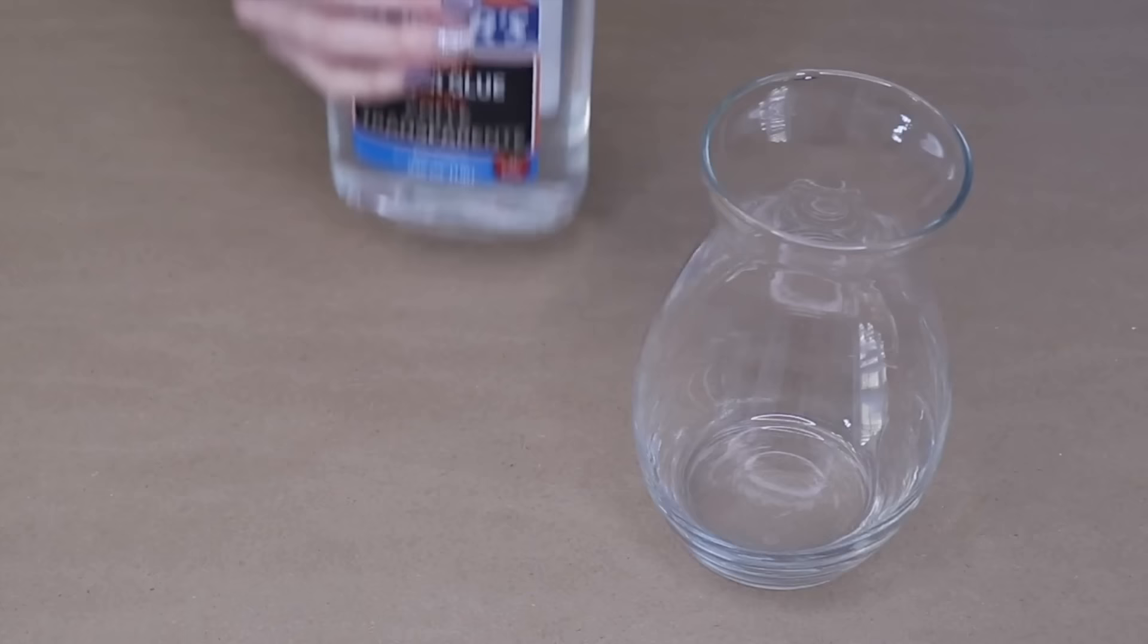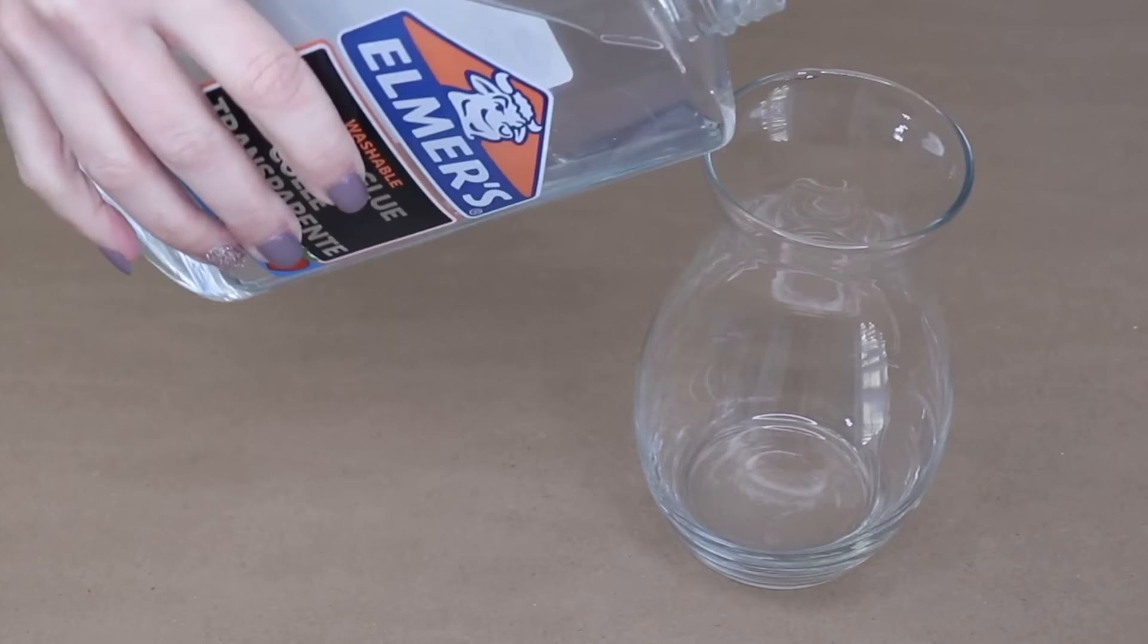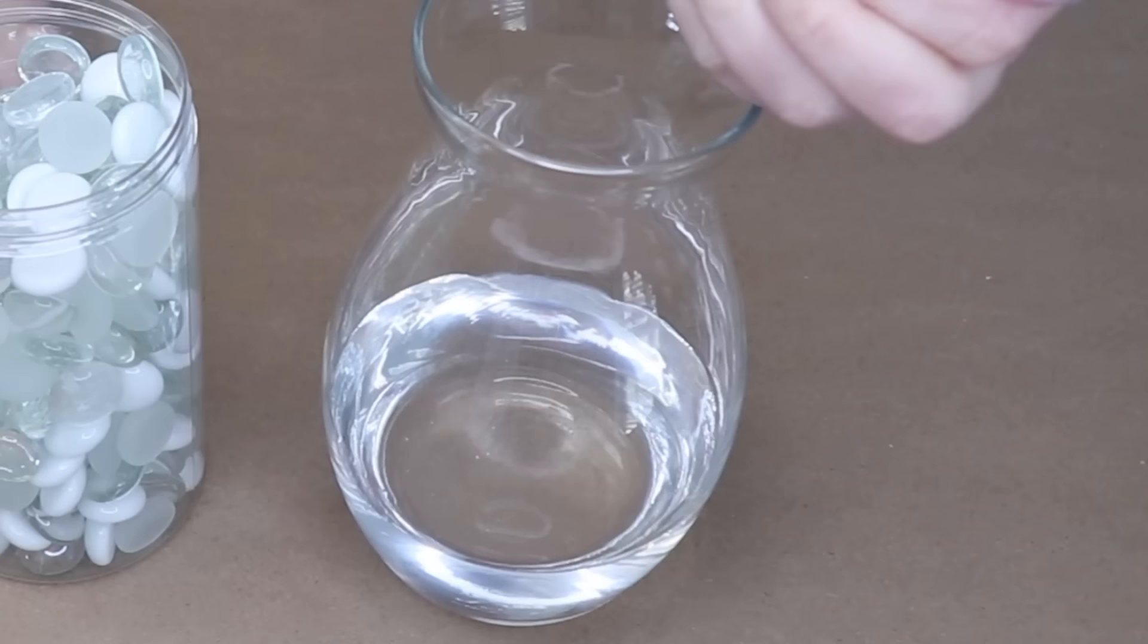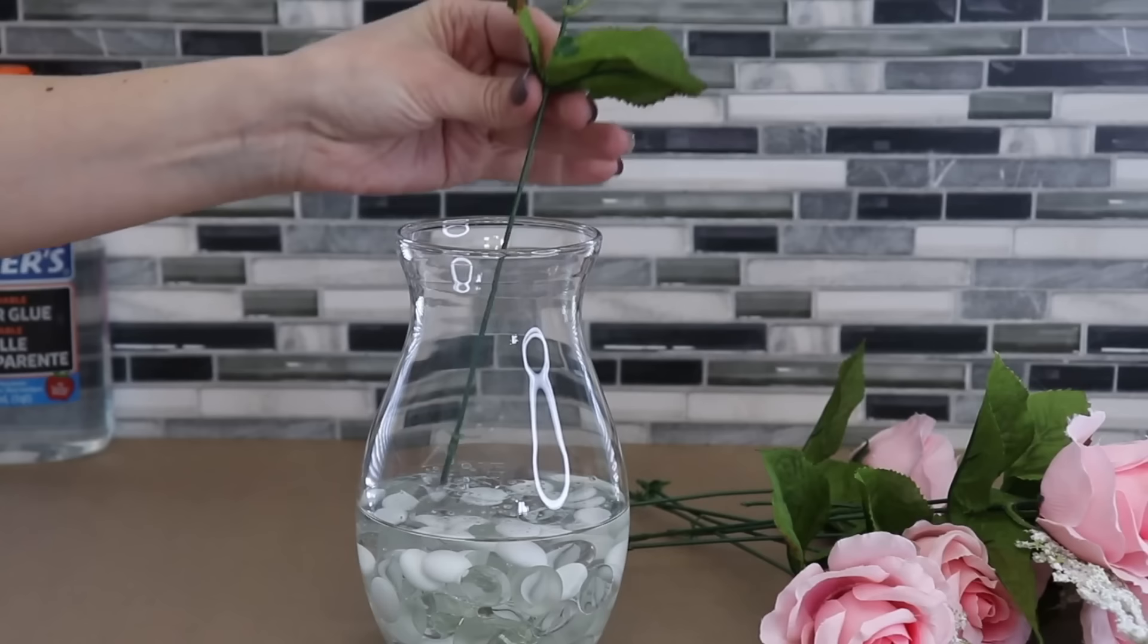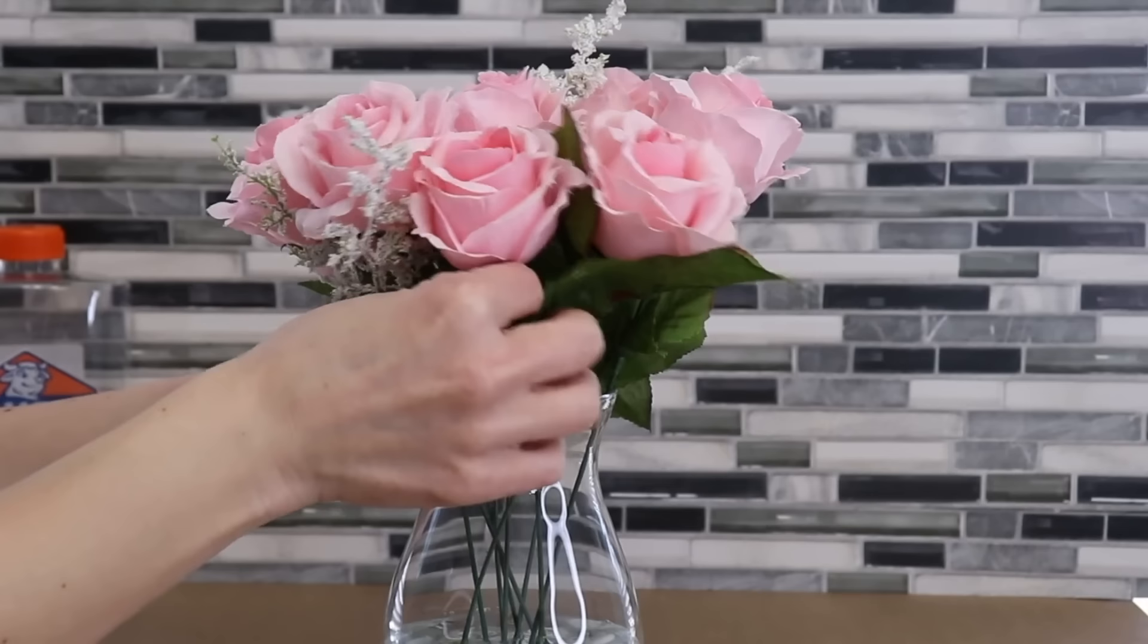Up first, we are going to fill this vase with the clear glue, then we're going to add in some clear and white decorative pebbles. Now I'm going to grab some faux flowers. I'm just going to stick these into that glue.